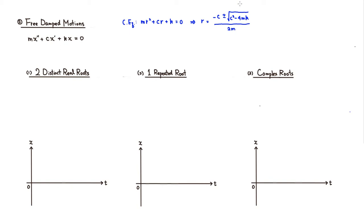So depending on this guy right here, the value here, we're going to get a different kind of roots. So for example, if c squared minus 4mk happens to be greater than zero, then you will get two distinct real roots. So let's say you're going to have r equals r1 and r2.